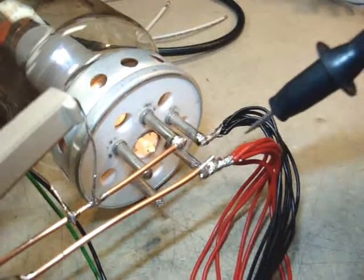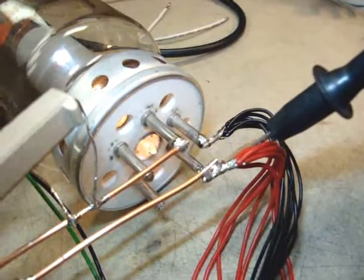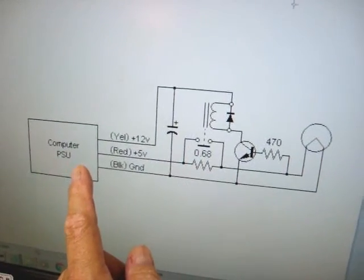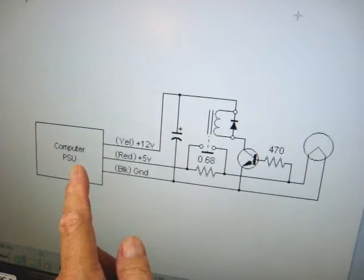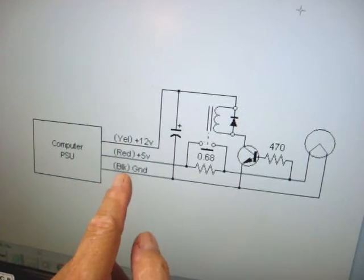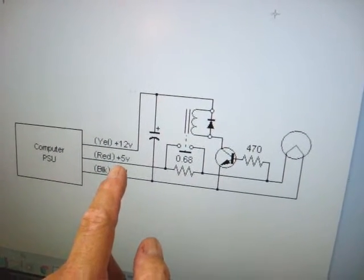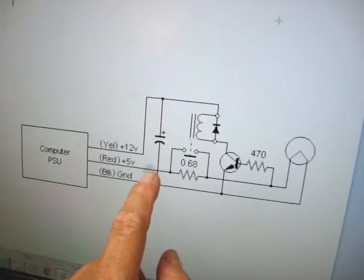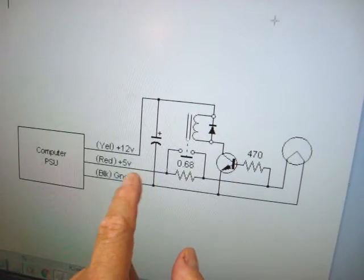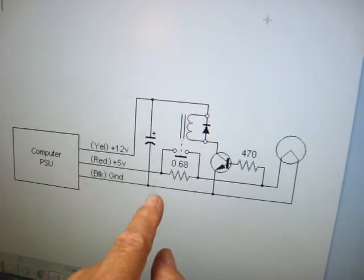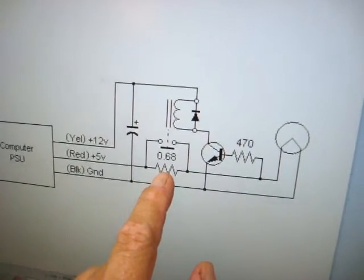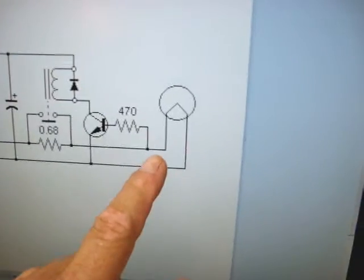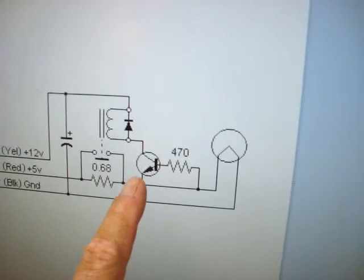Here's the schematic diagram. Computer power supply—I'm utilizing the yellow, red, and black. Red of course is the 5 volt. You have to bundle all those wires together because they're handling a lot of current, and the same with the ground. First here is the 0.68-ohm resistor and the relay, and then finally it goes to the filament of the tube.